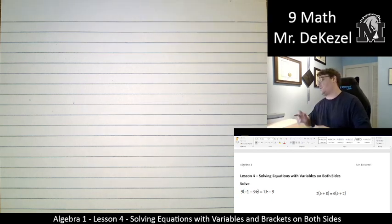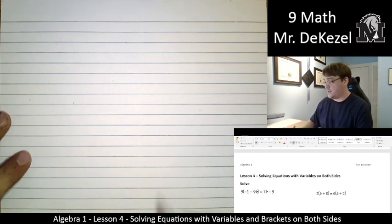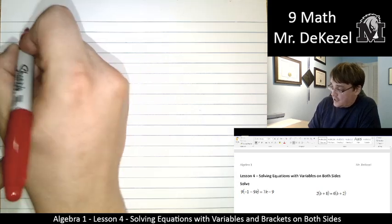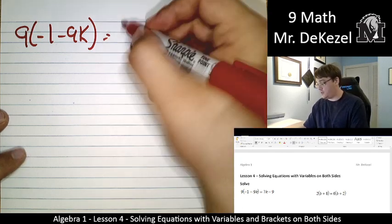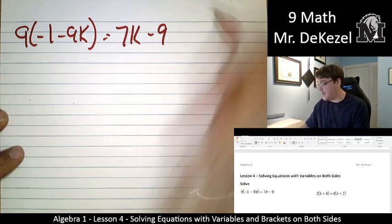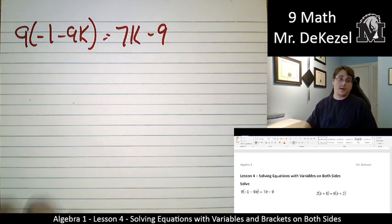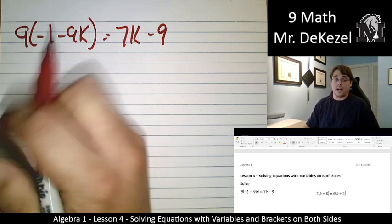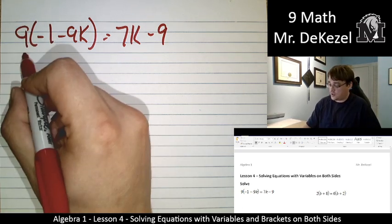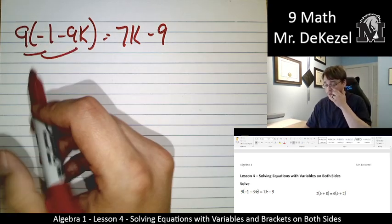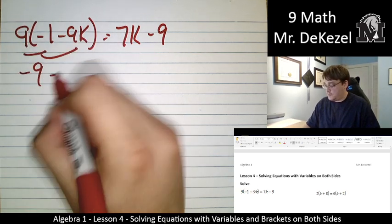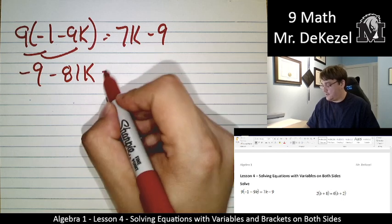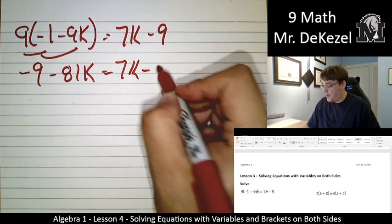You can see the first question. This one just says variables on both sides, it's not brackets yet. So 9 times minus 1 minus 9k is equal to 7k minus 9. All right, let's go ahead and get rid of the brackets using the distributive property. Let's multiply both of those. Minus 9, and then 9 times minus 9 is minus 81k. It's equal to 7k minus 9.